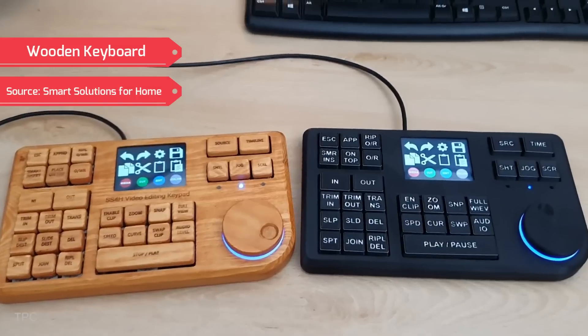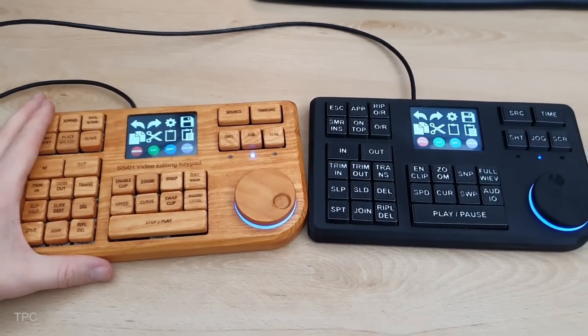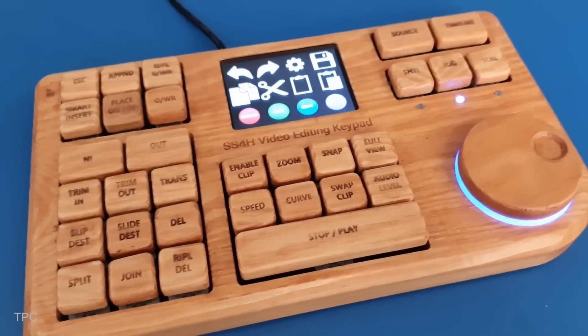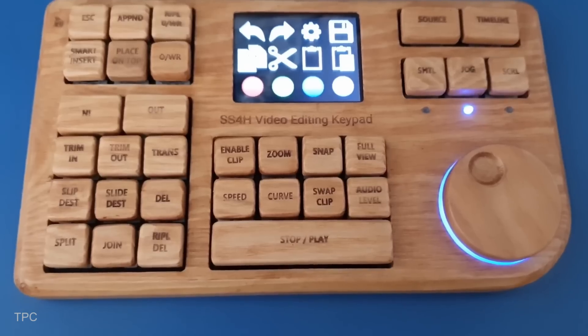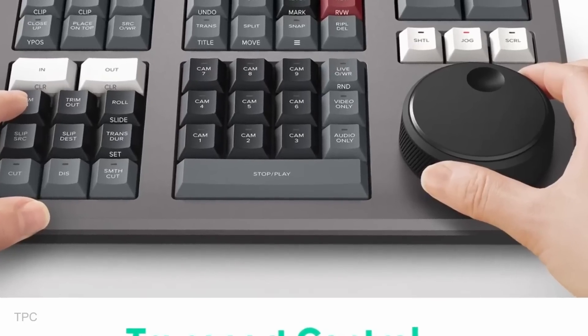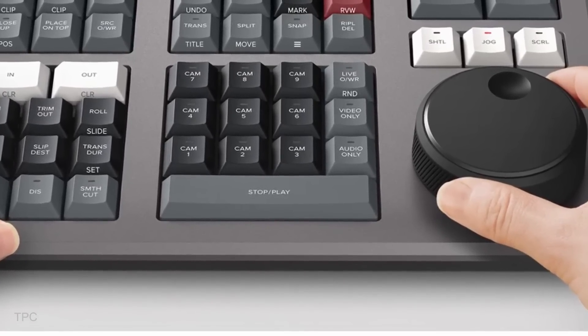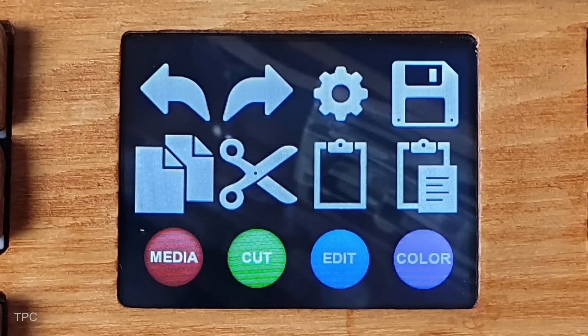Number 7. To make video editing more efficient, Sebastian decided to build a custom macro keypad that lets him perform tasks with a single press instead of using complicated shortcuts. He took inspiration from the DaVinci Resolve speed editor, but customized it by removing unnecessary features and adding a rotary knob and touchscreen for extra control.